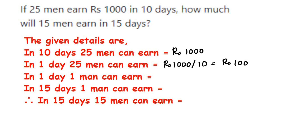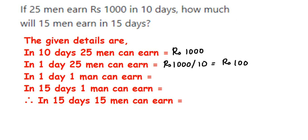Now we have to find out for each individual person among the 25 men. This 100 rupees will be equally distributed among 25 people, so we divide 100 by 25 to find out how much each person is earning. In one day, one man earns rupees 100 divided by 25, which equals rupees 4.